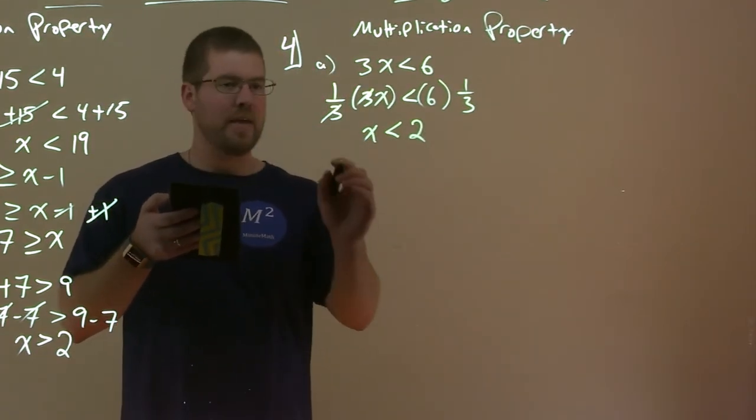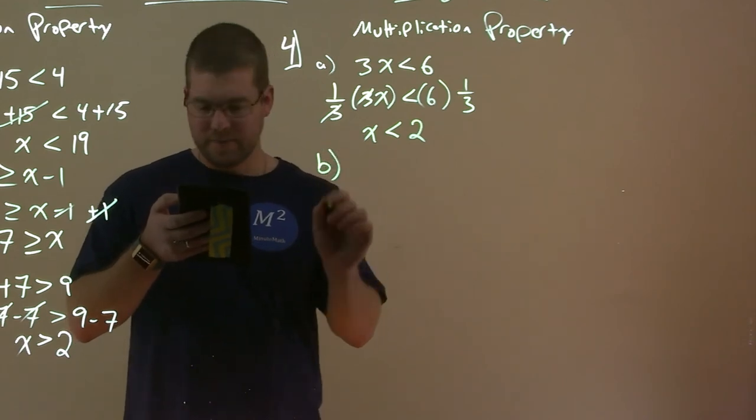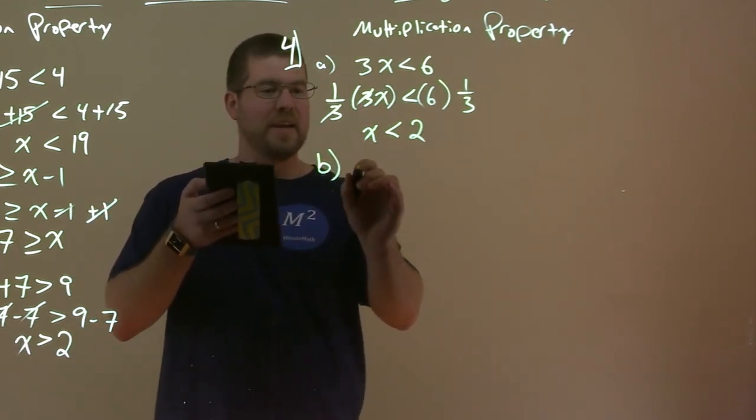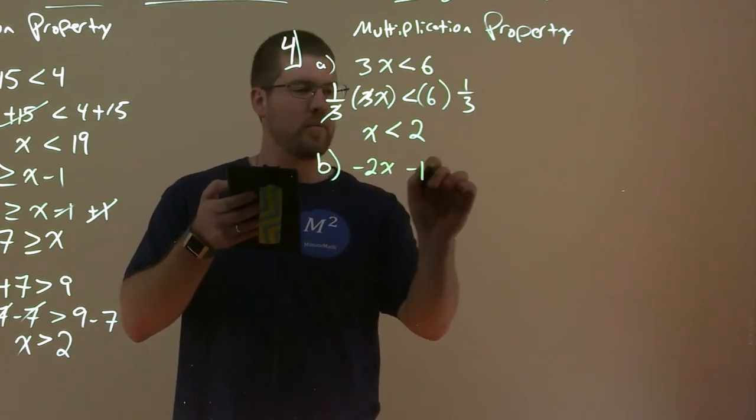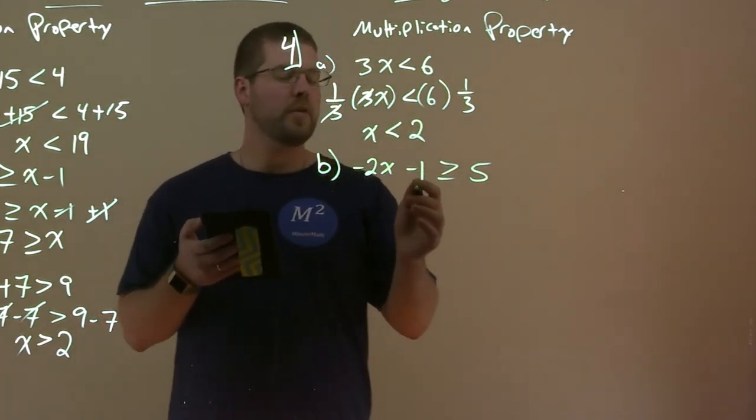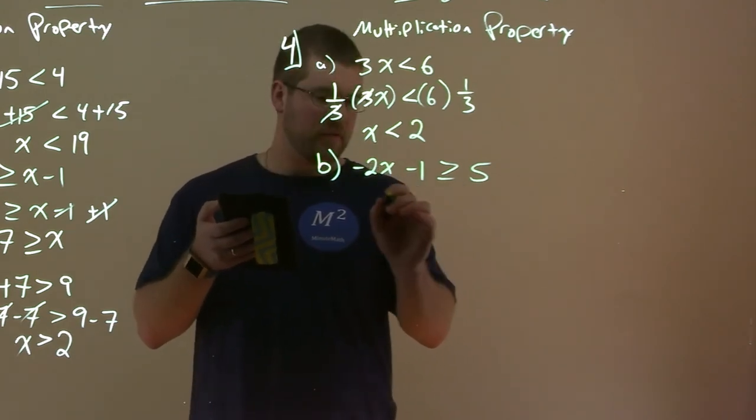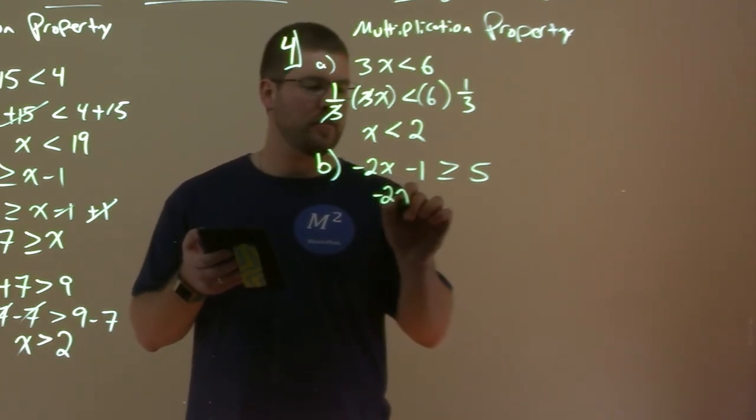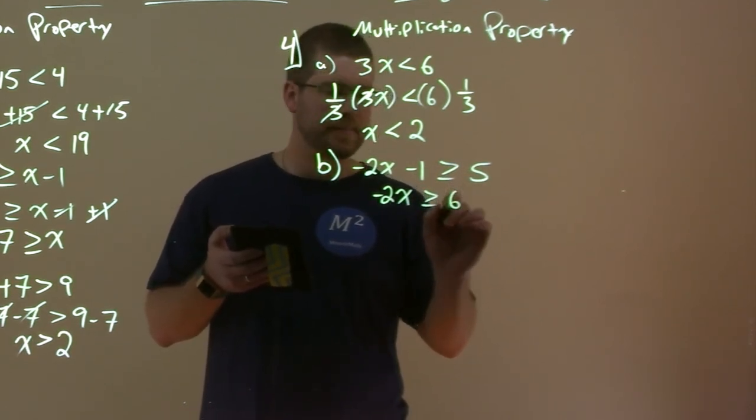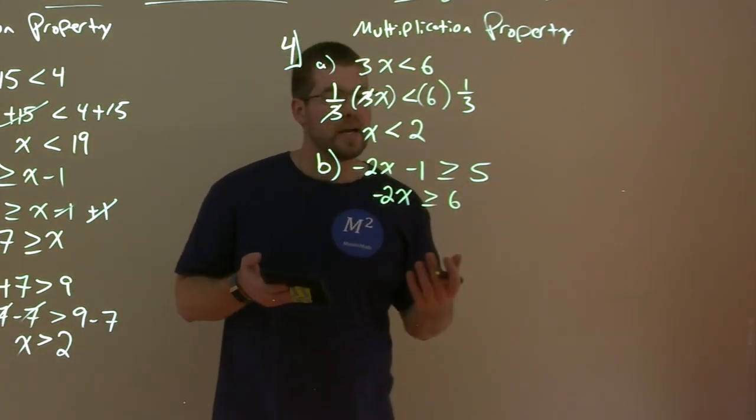Now we have part B here. So we have negative 2X minus 1 is greater than or equal to 5. So first thing, we can add 1 to both sides, which we've done before. So we have minus 2X is greater than or equal to 5 plus 1, which is 6.